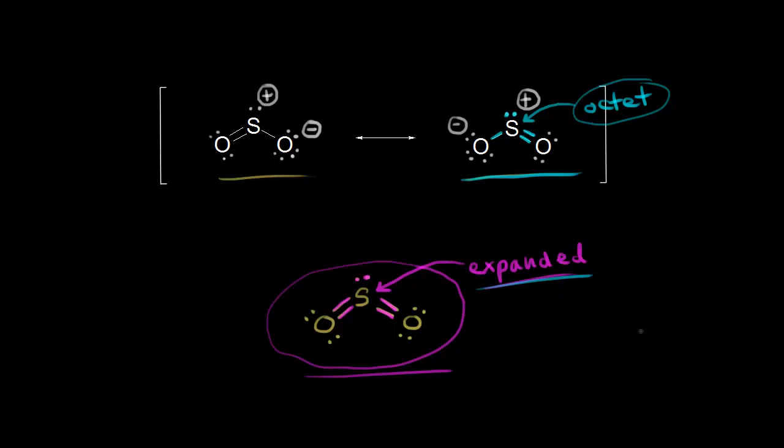So which version of sulfur dioxide is the correct one? In my opinion, they're both fine. Because for the first version, when we draw two resonance structures and we put in our brackets and everything, we are saying that the actual structure is a hybrid of our two resonance structures. So sulfur dioxide doesn't look like this, it doesn't look like this - it's a hybrid of our resonance structures.